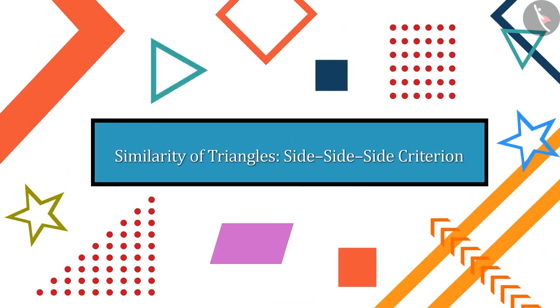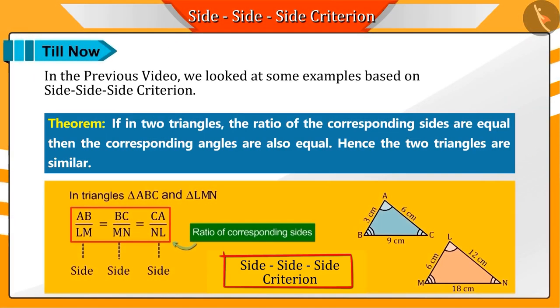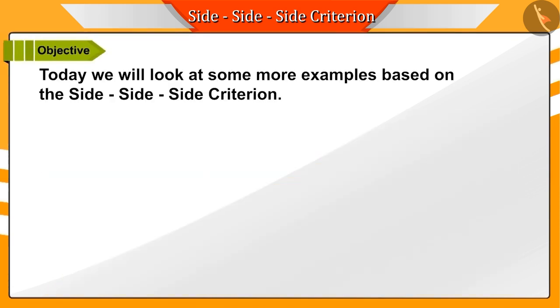Welcome to this video. In the previous video, we looked at some examples based on the side-side-side criteria for similarity of triangles. Today, we will look at some other examples based on the side-side-side criteria.